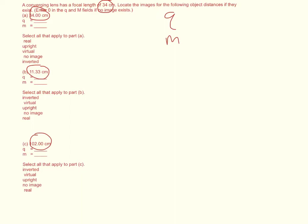So we'll start with our 1 over P. So this is the thin lens equation. 1 over P plus 1 over Q is equal to 1 over the focal length.